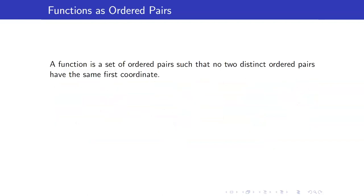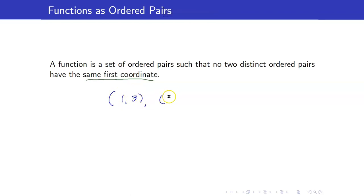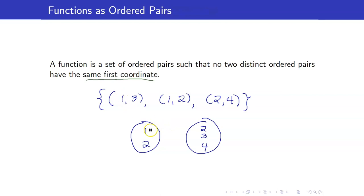Given a relation represented as ordered pairs, you know it will be a function if there are no two distinct ordered pairs that have the same first coordinate. If you have, say, (1, 3) and (1, 2) and (2, 4), representing this as a graph: 1 goes to 3, and 1 goes to 2 — you have one element in X that went to two different elements of Y. That is why you cannot have two distinct ordered pairs with the same first coordinate. So this is not a function.